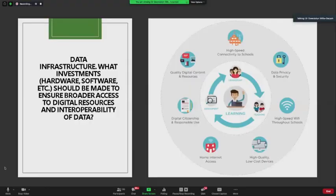Data infrastructure is a very important one. And we must ensure that teachers, students, and parents have access to digital devices and platforms by closing the digital divide. And so we do that by making sure, for example, there's high-speed connectivity to schools, that you adhere to data privacy and security measures, that there's high-speed Wi-Fi throughout the school, high-quality, low-cost devices, home internet access, digital citizenship and responsible use, and quality digital content and resources. And this is all surrounded by the core. The core is surrounded by these aspects. And the core is good leadership, good teaching, and good assessment.